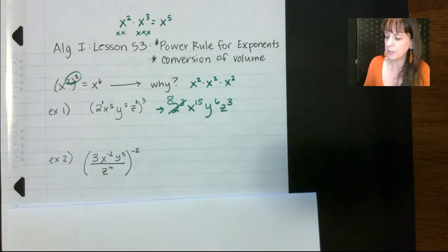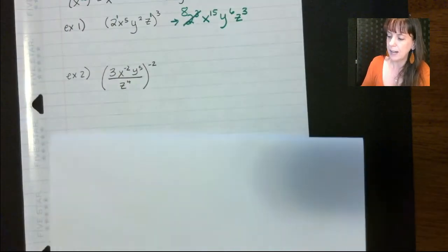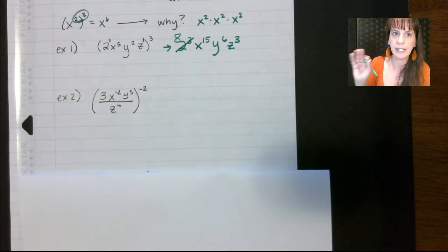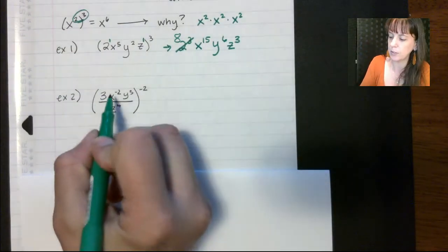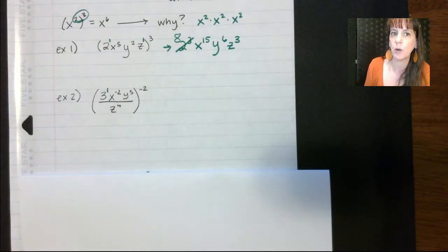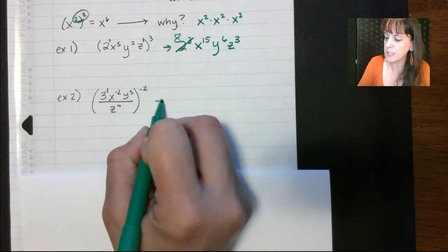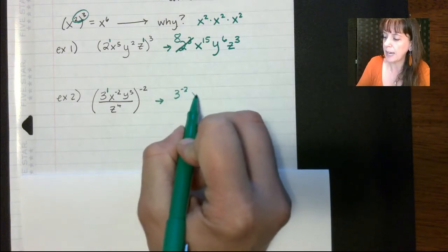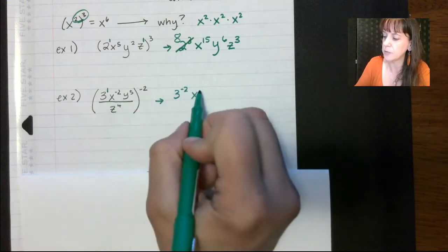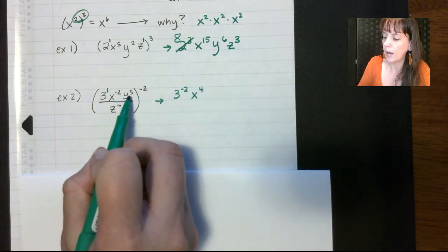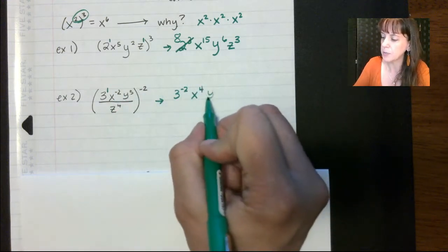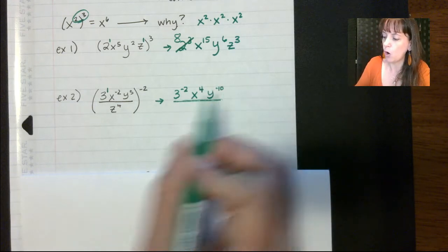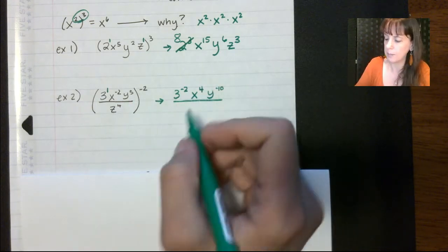Let's look at example number two — we have all of this to the negative two. Again, if something doesn't have an exponent, let's put a one. So that's three to the first power. If I distribute this out, we get three to the negative two, x to the negative two times negative two is positive four, y to the fifth times negative two is y to the negative ten. And then you also have to distribute downstairs — don't forget that part.